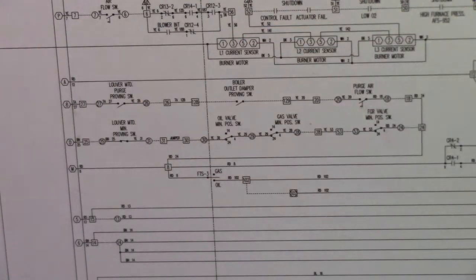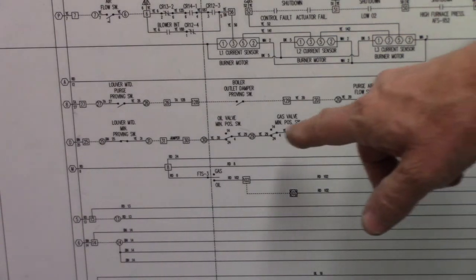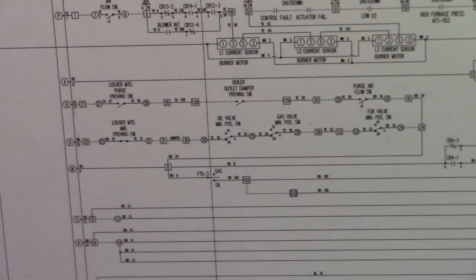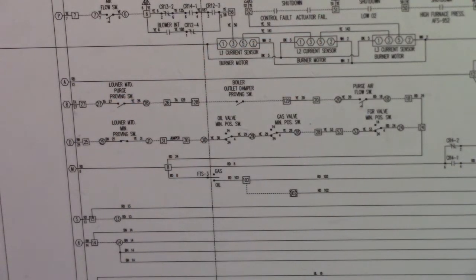All three of these need to be in proper position for a purge to occur. The outlet damper needs to be open, we have to have enough purge air for the purge, and the inlet damper needs to be open.